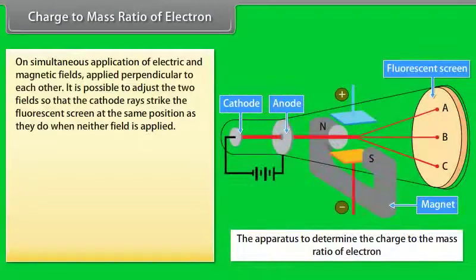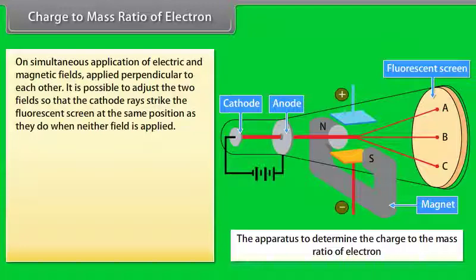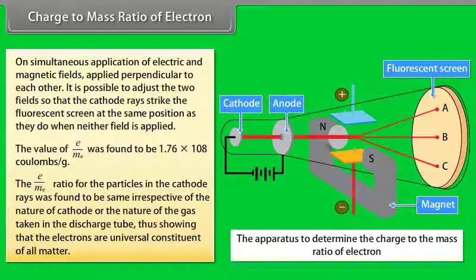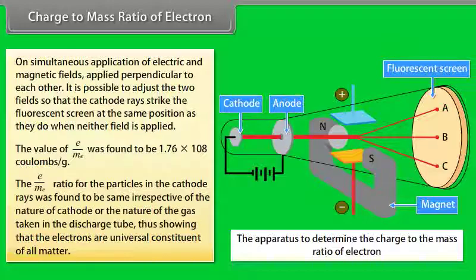Charge to mass ratio of electron: On simultaneous application of electric and magnetic fields perpendicular to each other, it is possible to adjust the two fields so that cathode rays strike the fluorescent screen at the same position as when neither field is applied. The charge to mass ratio of electrons was found to be 1.76 × 10⁸ coulombs per gram. This E/M ratio was the same irrespective of the nature of the cathode or the gas in the discharge tube, showing that electrons are a universal constituent of all matter.